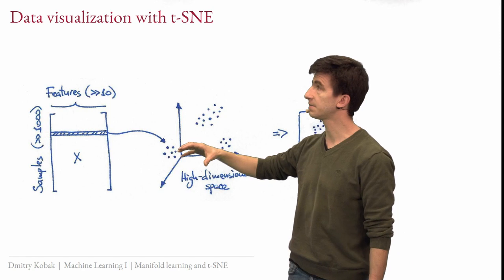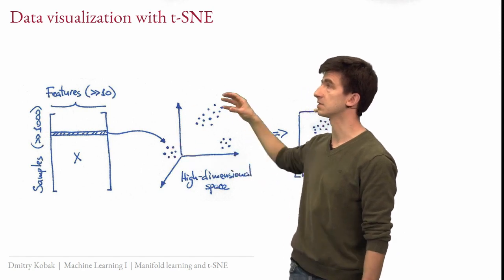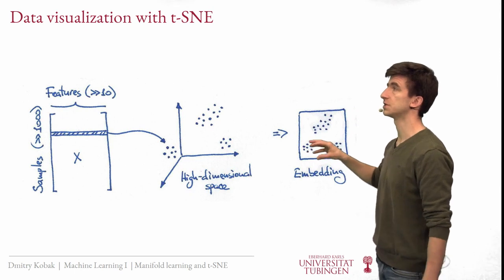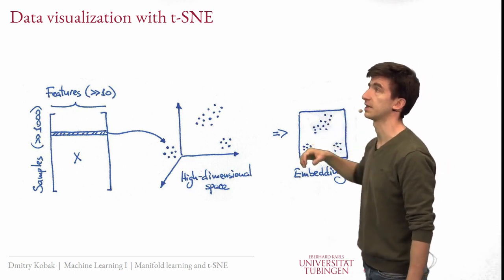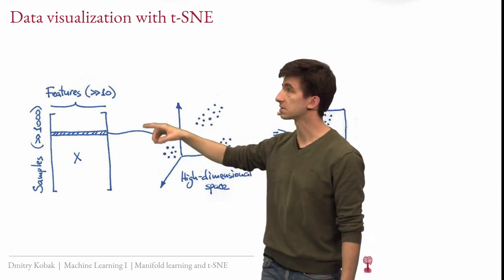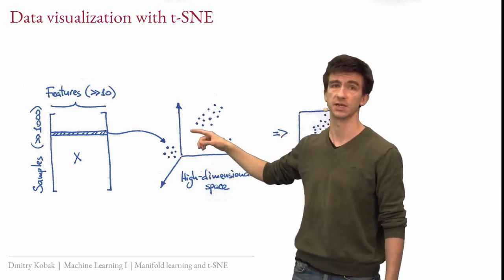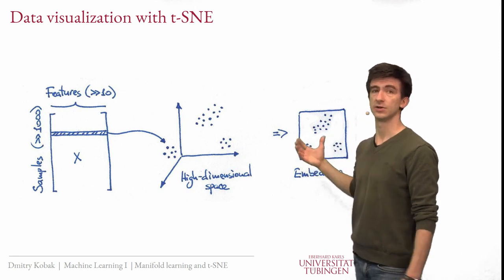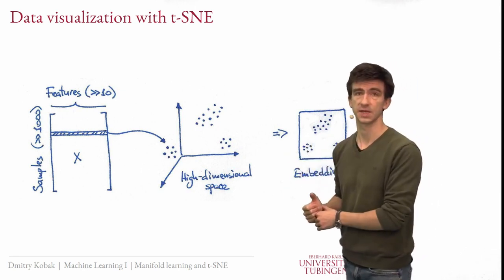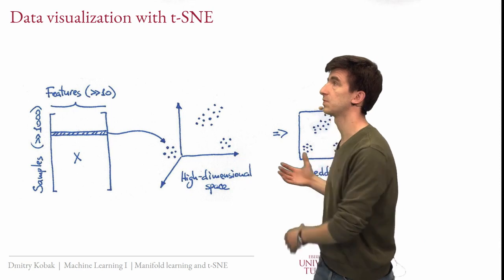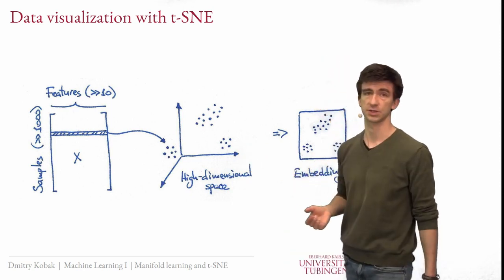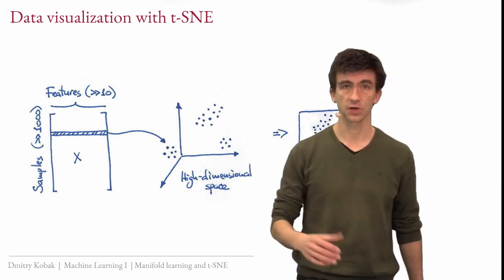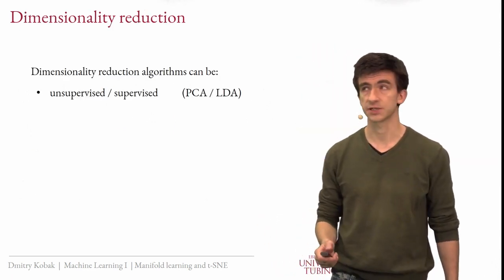The task is to embed high dimensional points into two dimensions to preserve some interesting structure. For example, if the high dimensional data have three well separated clusters, we would ideally want to see three well separated clusters in the embedding. If there are more complicated structures present in the high dimensional data, we would like to see these in the embedding as well. Not everything can be preserved, but we would like to preserve as much interesting structure as possible. This is the task of T-SNE.